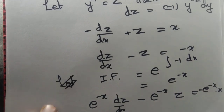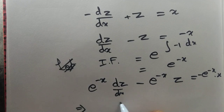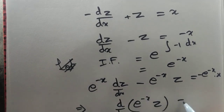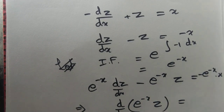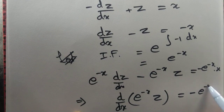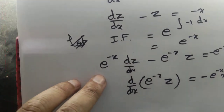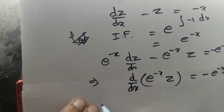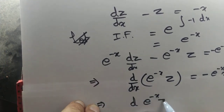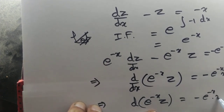Minus is also there. Now you observe that the left-hand side can simply be written as d/dx of (e^(-x) · z). That is the advantage of multiplying by the integrating factor. So d/dx(e^(-x) · z) = -e^(-x) · x. Now you can simply integrate it.